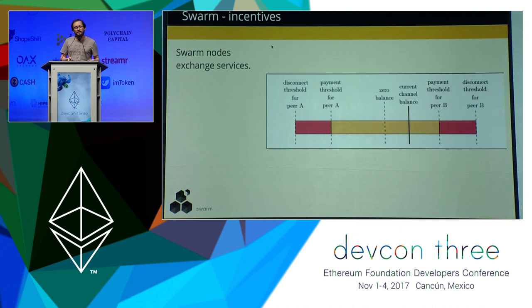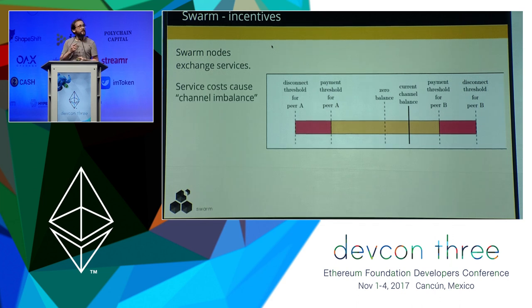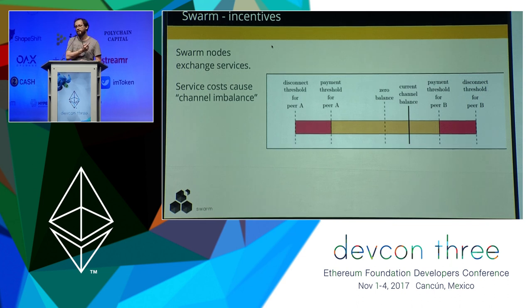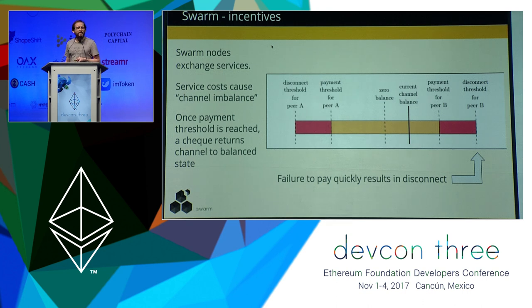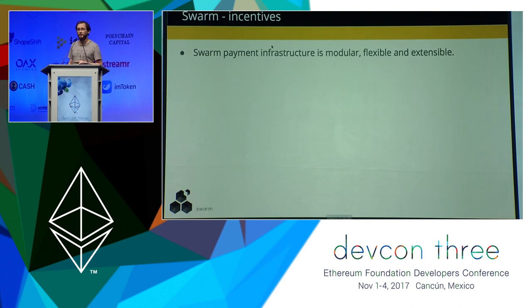Within the SWAP channel, in the middle where the balance is zero, neither node owes the other anything. As services get consumed, the balance moves off to one side. At some point you'll hit the payment threshold, and the node in debt issues another check to bring the balance back to zero. The node always works to keep the SWAP within that middle range. If you slide too far off to the side, you get disconnected — that's the ultimate punishment in a peer-to-peer network. Nobody wants to talk to you anymore.